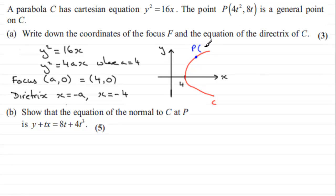And it has coordinates 4t squared and 8t. So if we're trying to find the equation of the normal, then what we've got to do is look at the gradient of the tangent at that point P, and then work out what the perpendicular gradient is going to be. And once we've got the perpendicular gradient, we can use the form of a straight line, y minus y1 equals m bracket x minus x1, taking x1 and y1 as these two values respectively. And hopefully after rearranging it, we'll get this equation here.